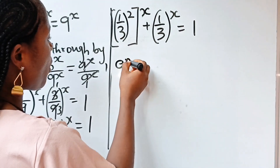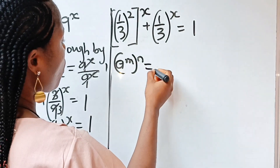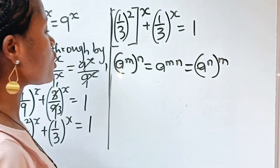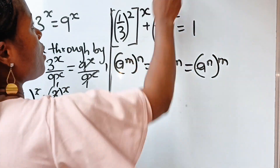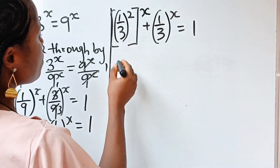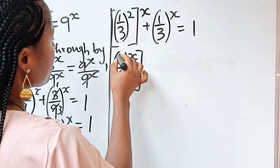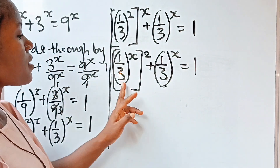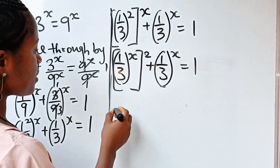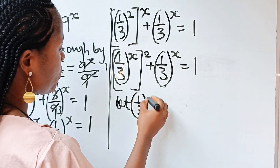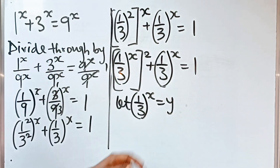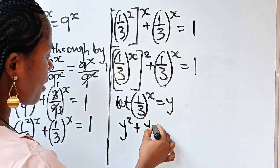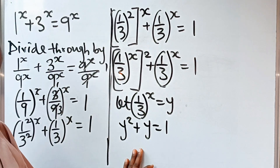Remember that when you have a to the power of m raised to the power of n, it's equal to a to the power of m times n. The power can be interchanged. So we now write this as 1 over 3 raised to the power of x, everything raised to the power of 2, plus 1 over 3 raised to the power of x, is equal to 1. We can see they have something in common, so let 1 over 3 raised to the power of x be equal to y. Then we write this as y squared plus y is equal to 1. Notice that we just formed a quadratic equation.